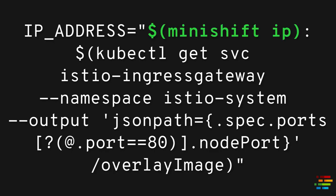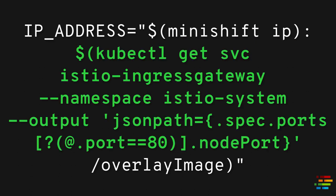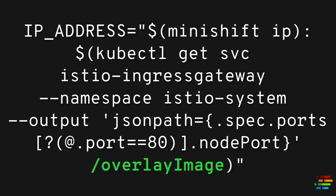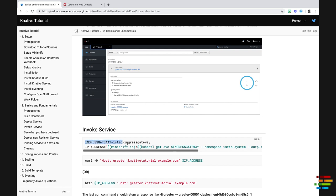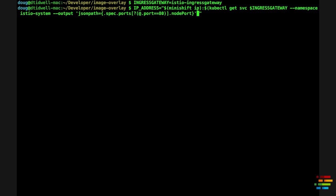Stand back from the screen because here comes the command to get the address. First, we get the IP address of the Minishift cluster — that's pretty simple. The hard part is getting the port number; this part of the command uses JSON to extract it. Then we wrap things up with /overlay-image. Cut and paste this from the tutorial unless you really enjoy typing.